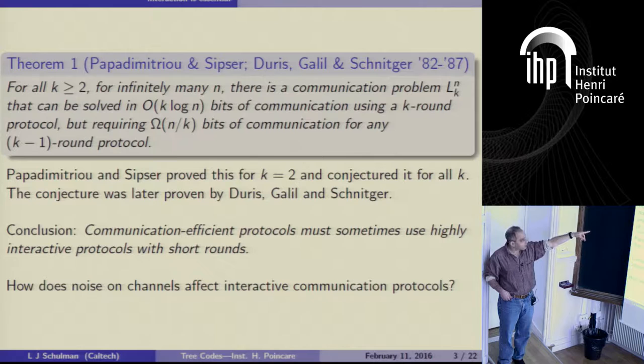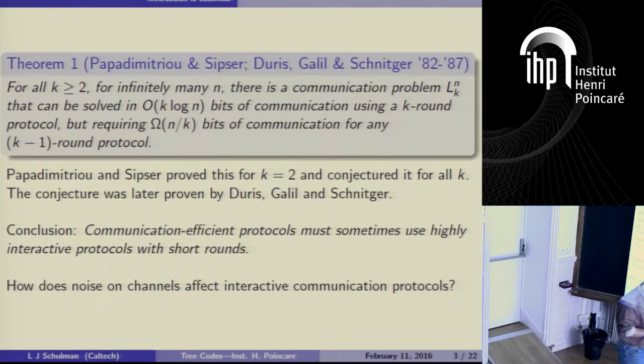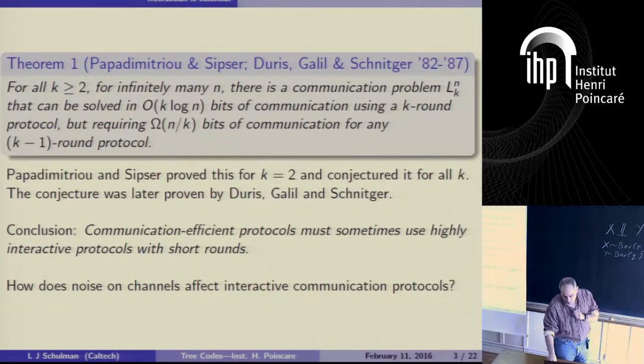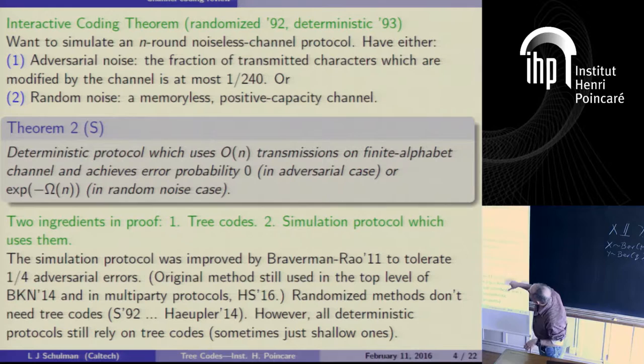The problem for k equals 2 is exactly Calvin's problem. The problem is always a pointer-jumping problem — a bipartite pointer-jumping problem — and Calvin was interested in the case k equals 2. That's just to fill in a little bit of the background and teach you a little bit of classic literature.